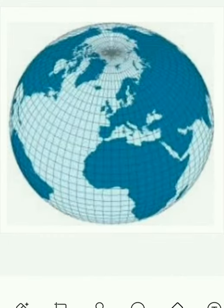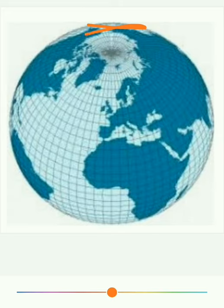See the picture carefully — the Earth is slightly flattened. Observe. Earth is slightly flattened at the poles and bulging at the equator.